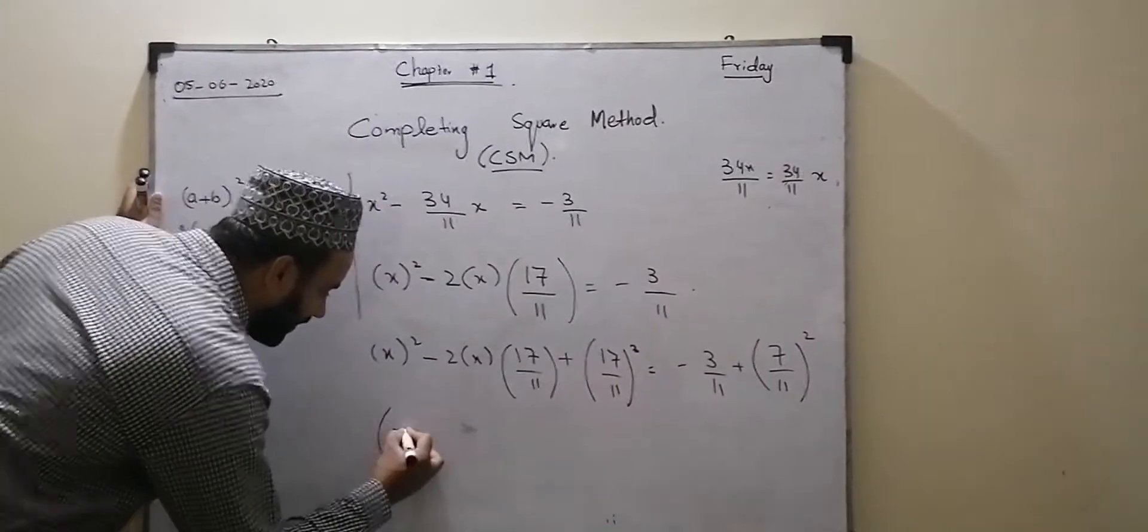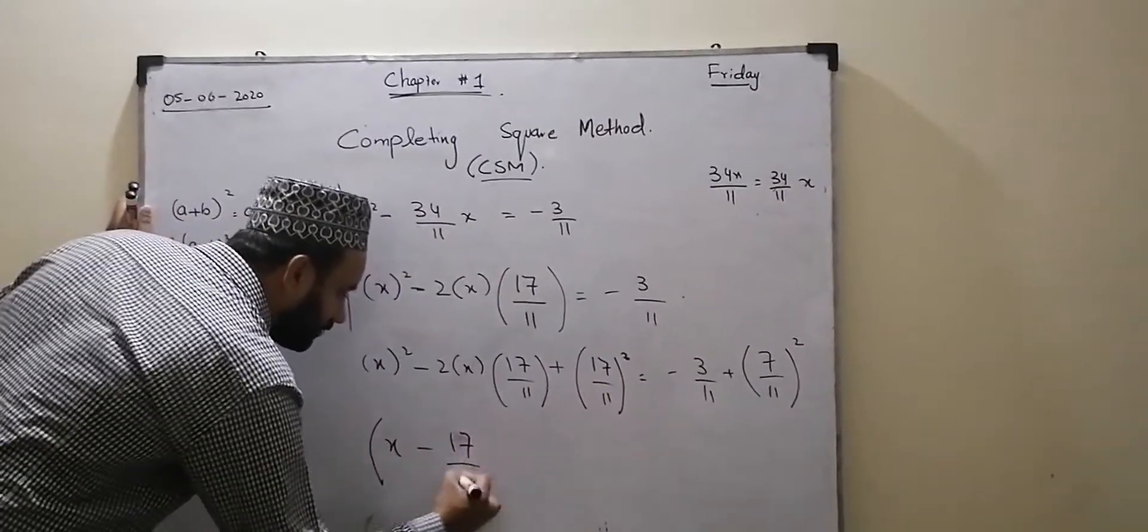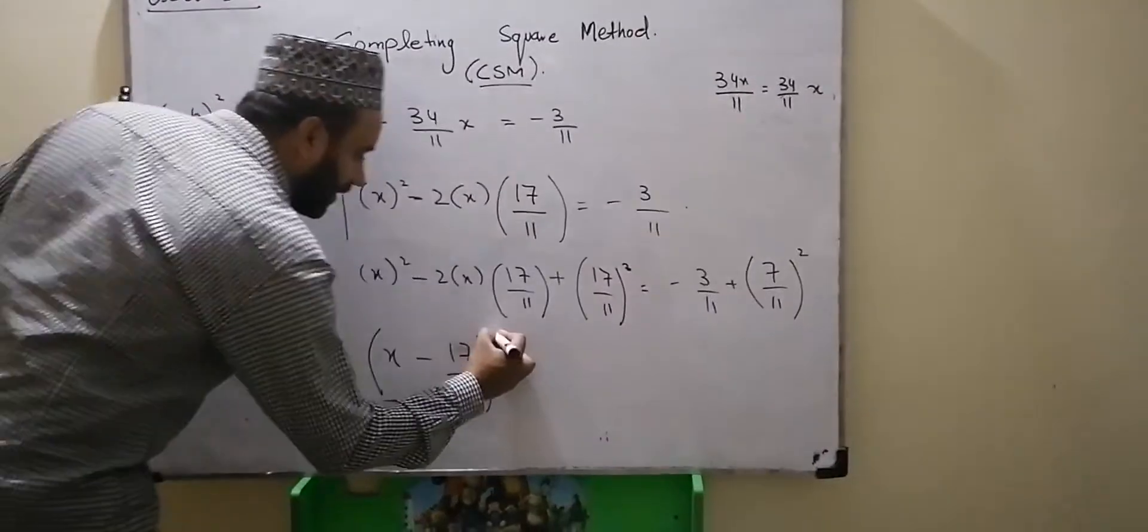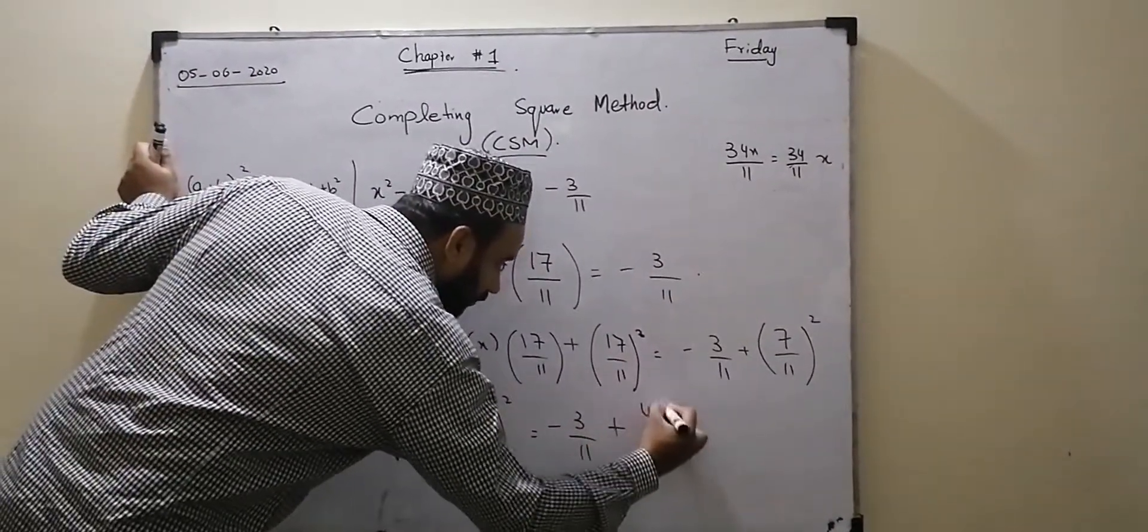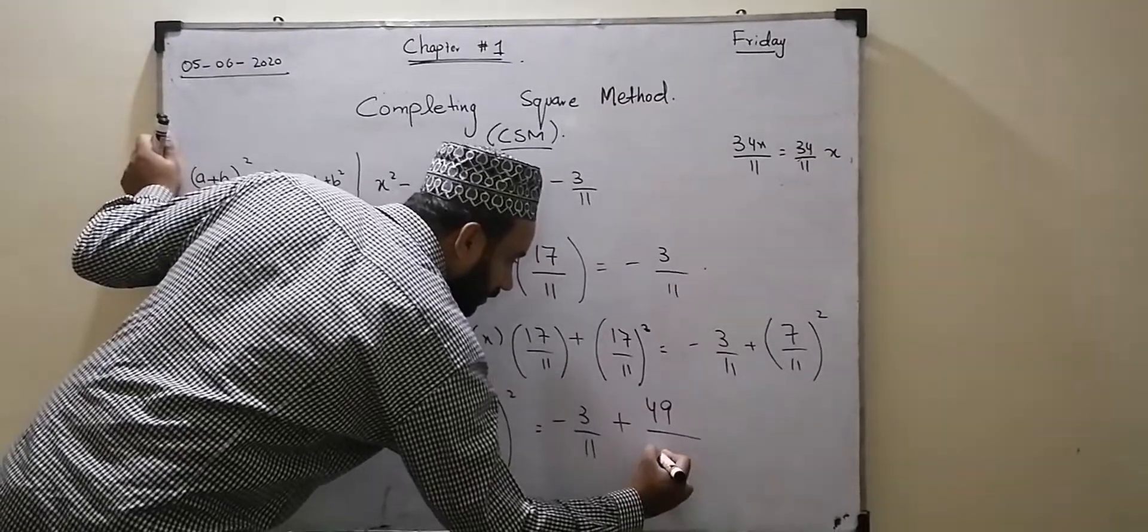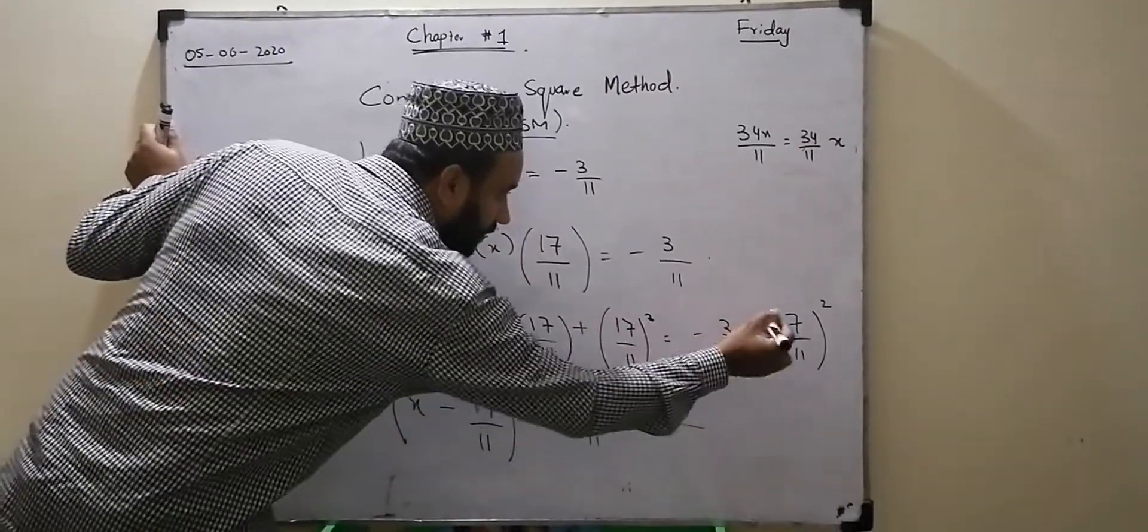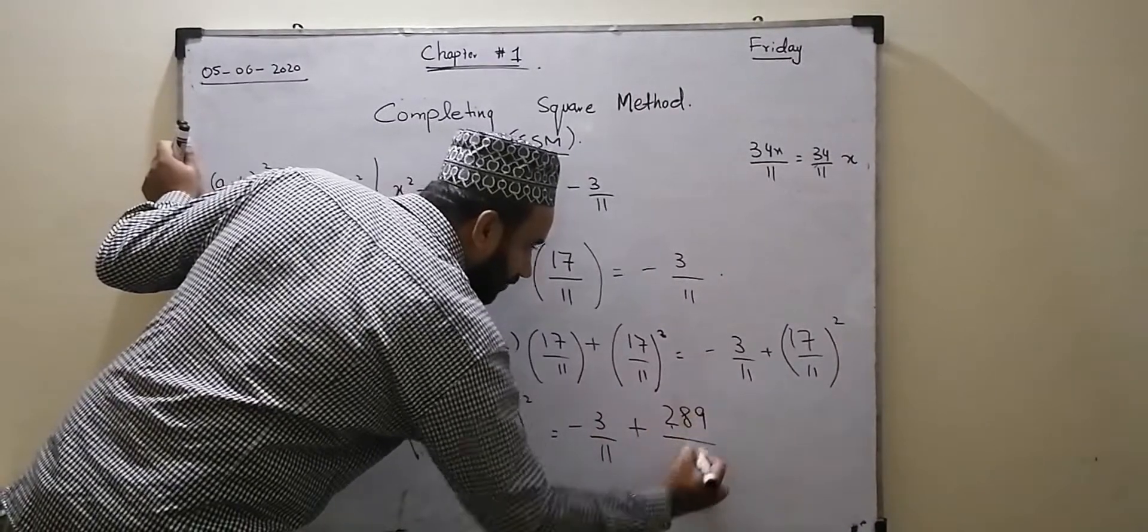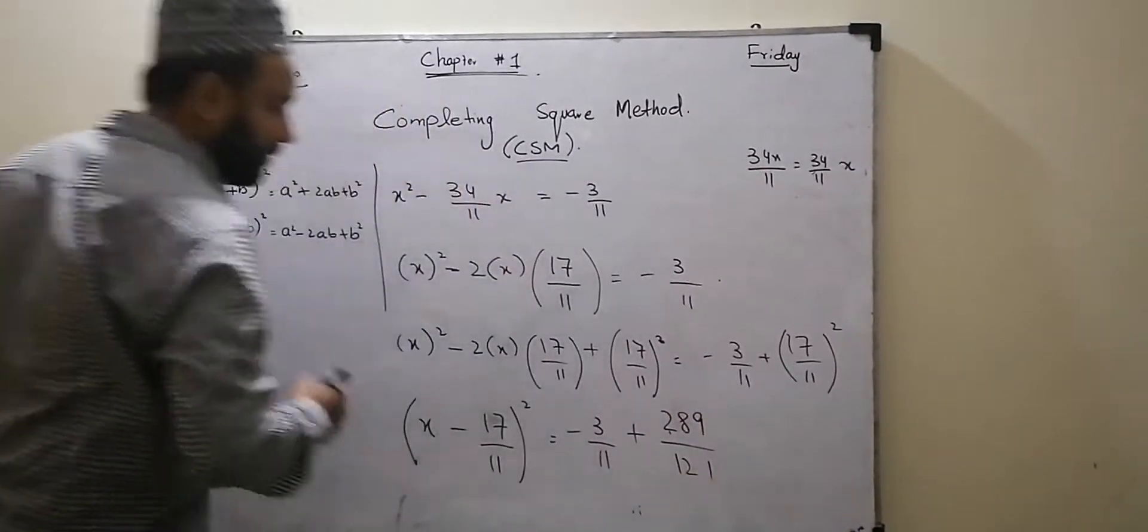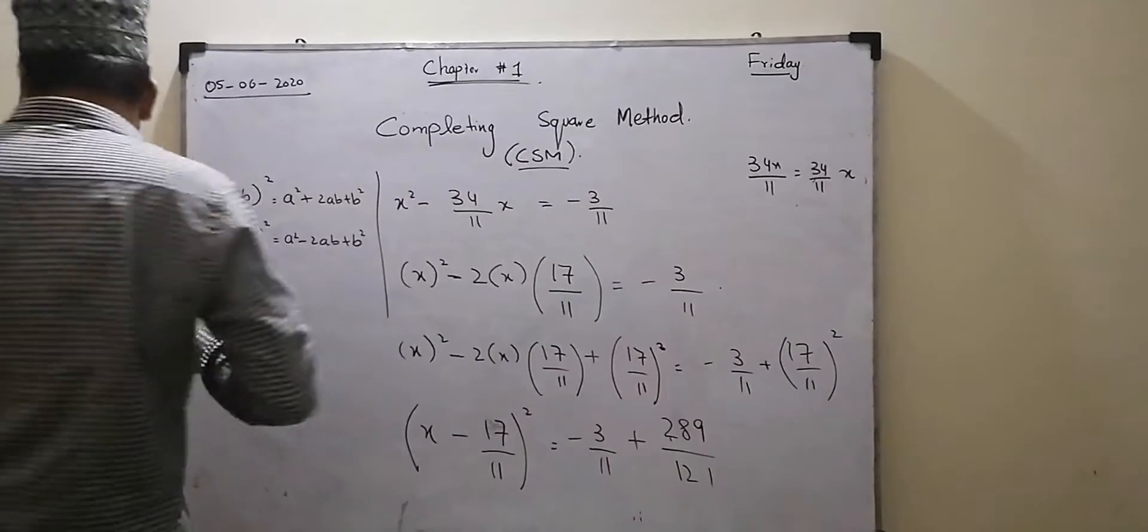And then what do we do? X minus 17 by 11 whole square. And minus 3 by 11 plus, it is 17 squared, so it will be 289 by 121.